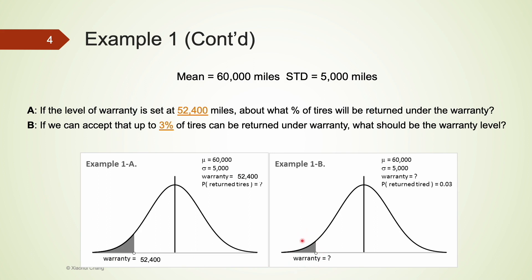Similarly, for part B, if we accept up to 3 percent of returns, none of the empirical rule's probabilities add up to exactly 3 percent. The empirical rule has limitations — if data are not normal, or z-scores are not exactly whole numbers, we simply cannot use it. That's why we should use Excel or a z-table to find exact probabilities.